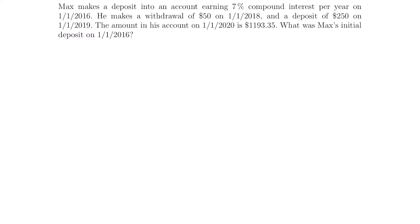Let's start with the first example. Max makes a deposit into an account earning 7% compound interest per year on the 1st of January 2016. He makes a withdrawal of $50 on the 1st of January 2018 and a deposit of $250 on the 1st of January 2019. The amount in his account on the 1st of January 2020 is $1,193.35. What was Max's initial deposit on the 1st of January 2016?